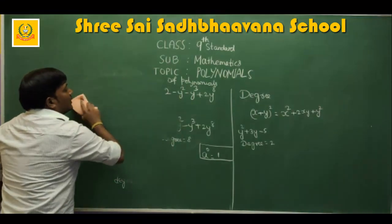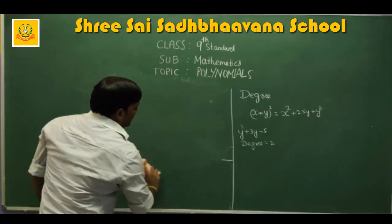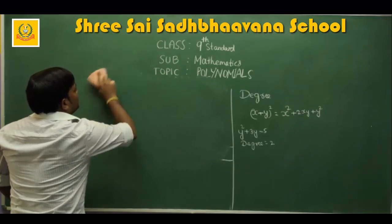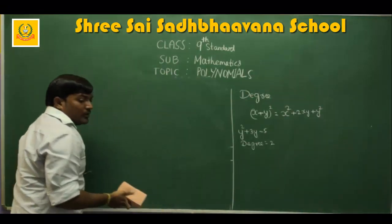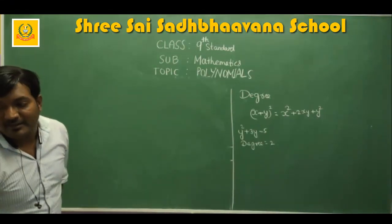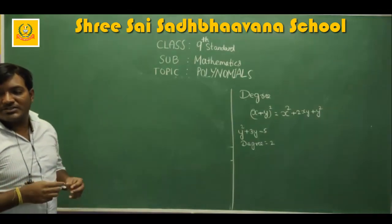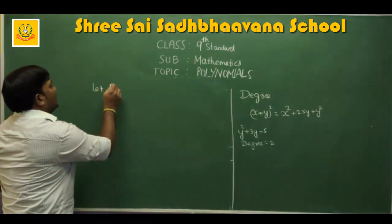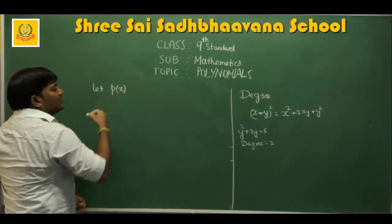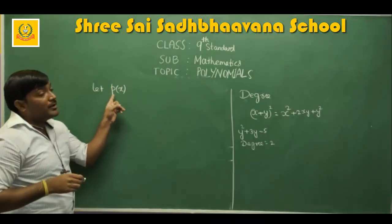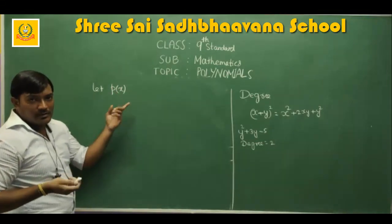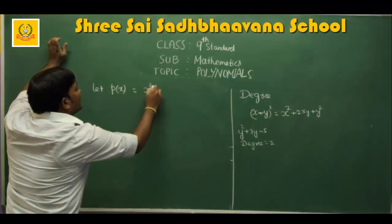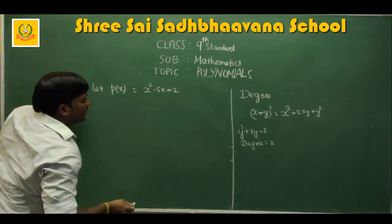Now we have one more concept to discuss: zeros of polynomials. Before understanding zeros of polynomials, you first have to understand the notation p(x). p(x) means polynomial in x. For example, let p(x) = x² − 5x + 2.